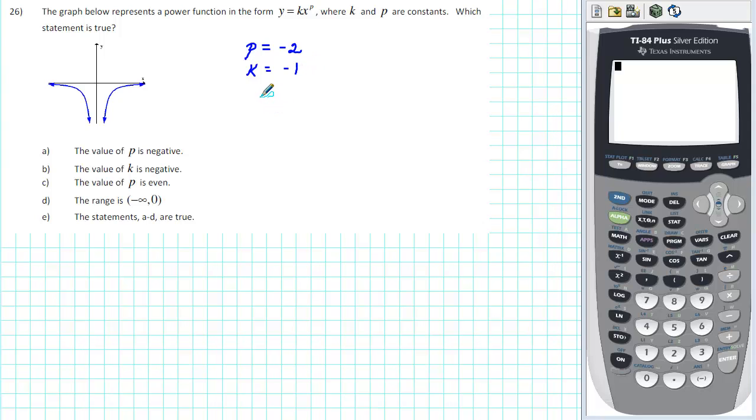Substituting those constants into the function gives us y = -1 times x raised to the -2.